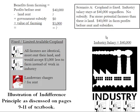In Scenario A, cropland is fixed — meaning there is this amount of land that people can use to raise crops and no more. We assume the industry salary stays fixed at $40,000 no matter what, because the industry is so large relative to farming that people entering or leaving to farm won't affect salaries. There is no government subsidy for farming, there are far more potential farmers than there is land, and farms initially make $40,000 in farm profits before subtracting out rent.